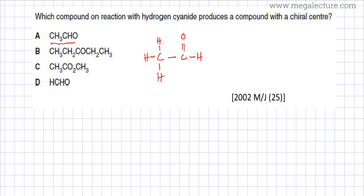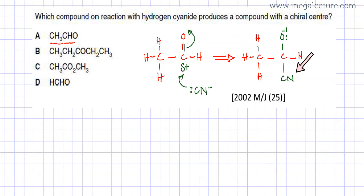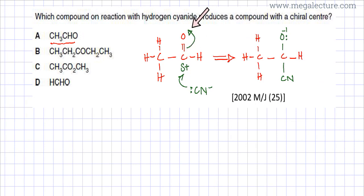When a reaction with HCN takes place, this carbonyl carbon has a slight positive charge, so CN⁻ ions are attracted to it. As the CN⁻ approaches this carbon atom, the electrons in the double bond get knocked away — they get repelled by the incoming negative charge — and the double bond breaks into a single bond. Oxygen then gets a −1 charge.